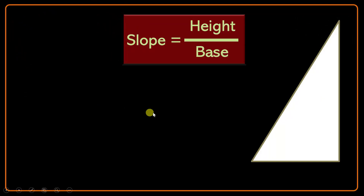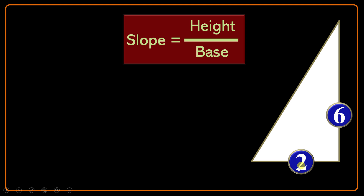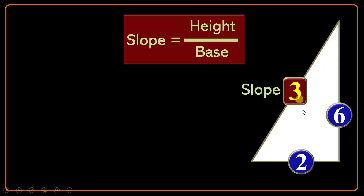Now look at these examples. In this triangle, the vertical side — the height — is given to be 6, and the horizontal side is given to be 2. So the ratio of 6 over 2 — height over base — will be the slope of this hypotenuse. It's 3. Pay attention: this 3 is not the length of the hypotenuse at all. It's just the slope of that.